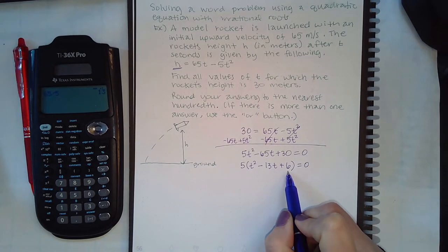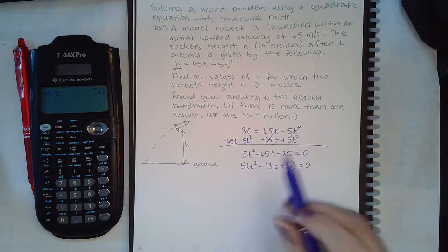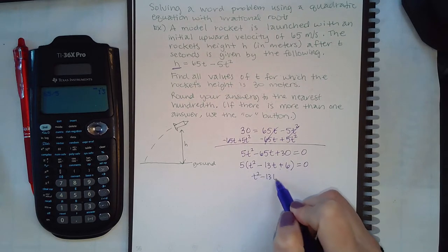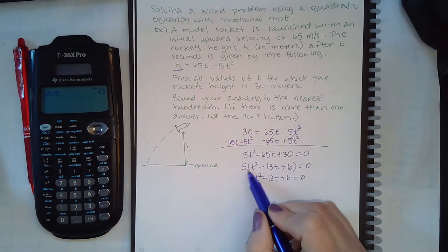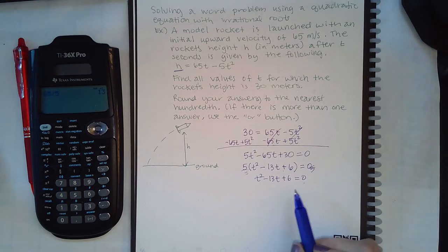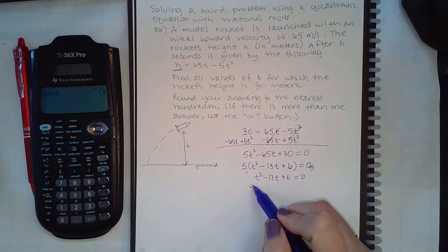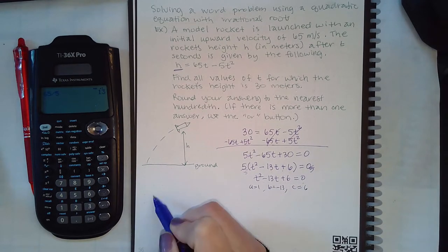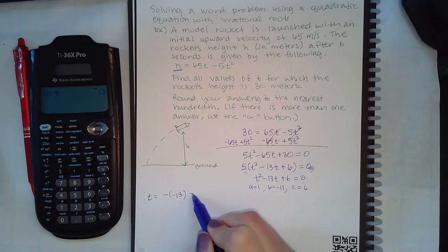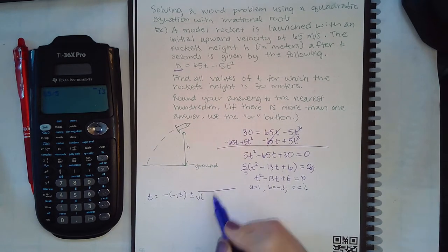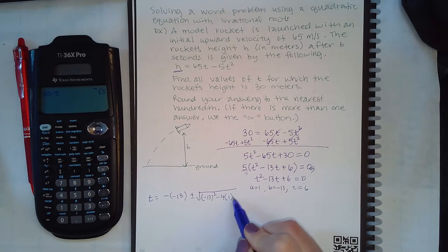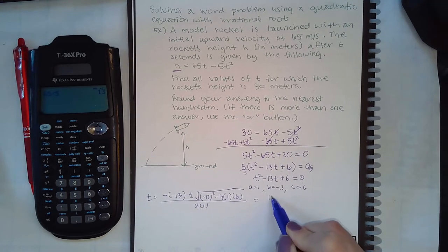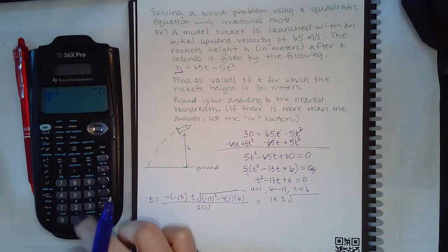Now we've got to try to factor this, but there are no factors of 6 that will add to give us 13. So the only other way we can solve this is, right, if you divide both sides by 5 now you have this equation, and we're going to have to use the quadratic formula. So a is 1, b is negative 13, and c is equal to positive 6. So t equals negative negative 13 plus or minus the square root of negative 13 squared minus 4 times 1 times 6, all over 2 times 1.